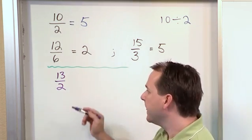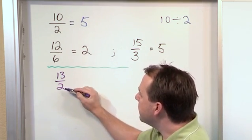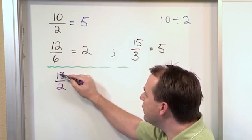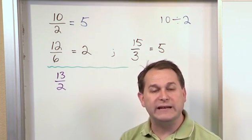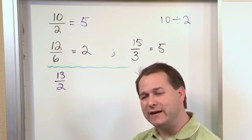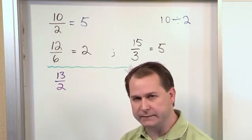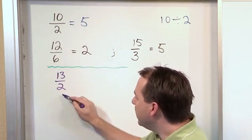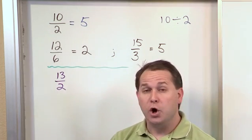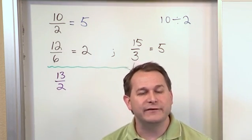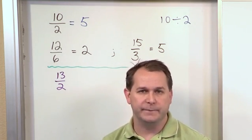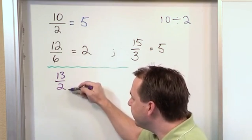you can convert it to a mixed fraction as well, but you can see that there's no way that you can take 13 and divide it by 2 and get a whole number. So because of that, because this doesn't divide evenly, typically we leave the improper fraction alone or we can convert it to a mixed fraction which we've already learned how to do. So it still looks like division, it's just that it doesn't divide evenly here.